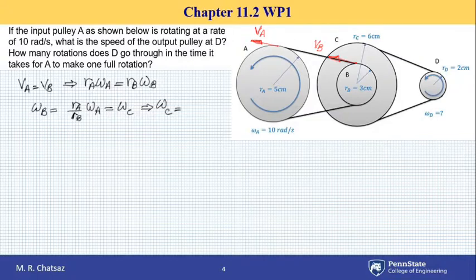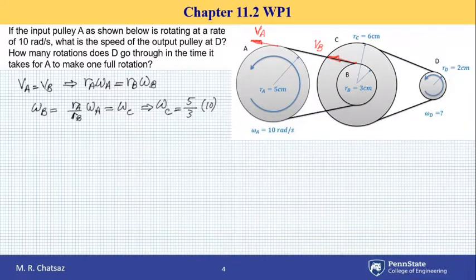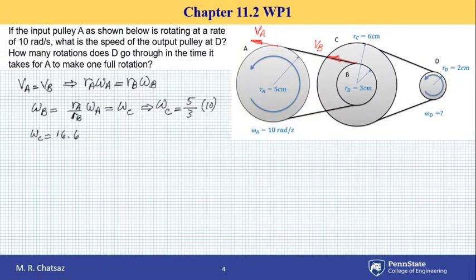I can calculate omega_C to be R_A, which is 5, over R_B, which is 3, times omega_A, which is 10. This gives me a rotational speed for both disk B and disk C. So omega_B or omega_C equals 50 over 3, which is 16.67 radians per second. Note that both radii are in centimeters, so they cancel out and 5/3 is just the ratio.